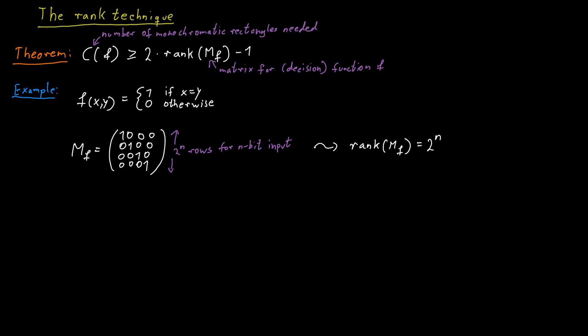We now apply our theorem, the rank technique. We know that the rank of the matrix is 2 to the n. And therefore, we know that to cover all the entries in this matrix with monochromatic combinatorial rectangles, we need at least 2 times the rank of this matrix minus 1 many such rectangles.